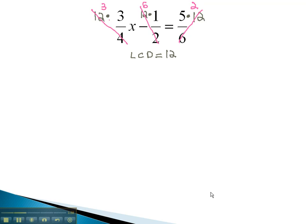Now, all that remains are these little multiplication problems in the numerators. 3 times 3x is 9x. Minus 6 times 1 is 6, equals 5 times 2, which is 10.